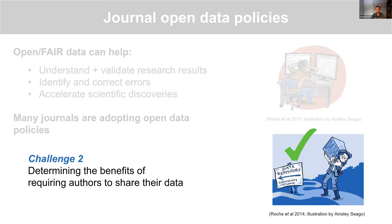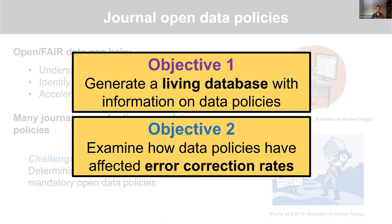We're lucky to have tools like the Sherpa Romeo database that help us keep track of journals' open access policies, but right now there's no equivalent for policies on open data. Another challenge from a meta-science perspective is determining what are the benefits of requiring authors to share their data — we often assume that open data are good for science and society, but we don't actually have that much empirical evidence to show for it. The two objectives of the study were to first generate a living database with information on the data policies of journals in ecology and evolution, and secondly to examine how these data policies have affected error correction rates.